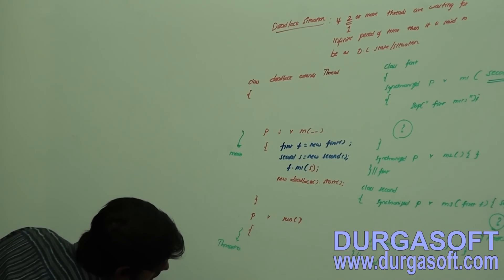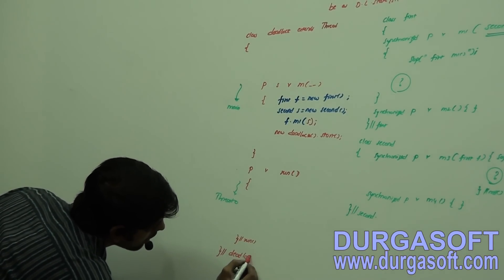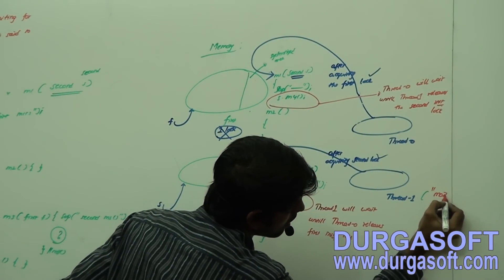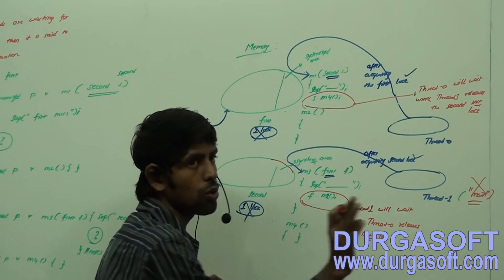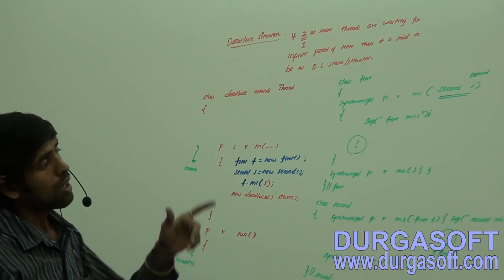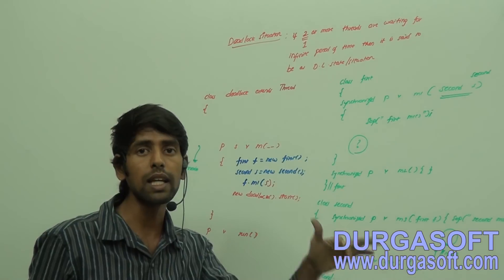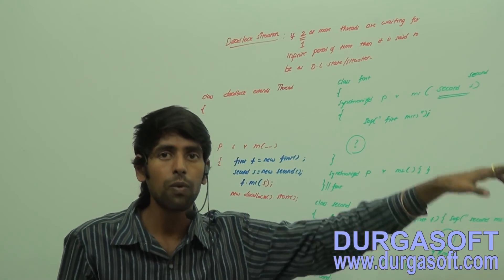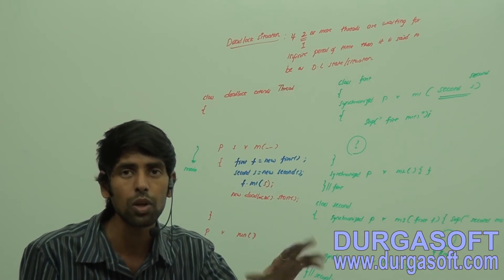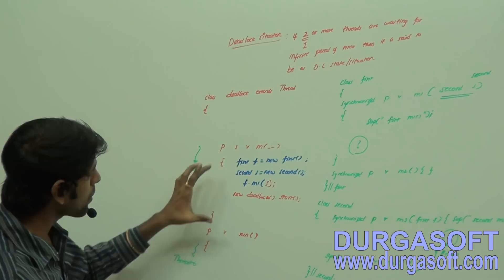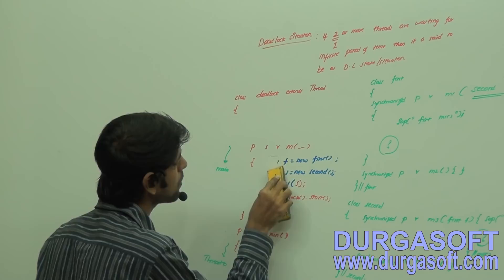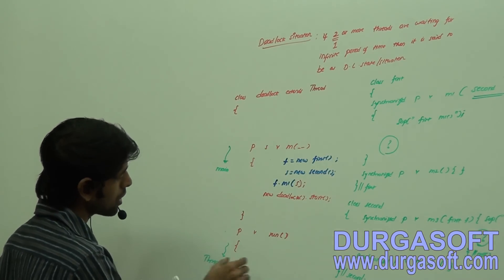This thread is thread one and main thread is also there. Main thread has to call m3 on the second instance, and simultaneously thread zero has to call m1 on the first instance. To achieve this, I need to make the first and second references static, so I can access them both inside and outside the run method without restrictions.